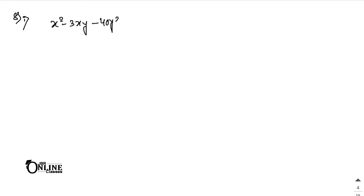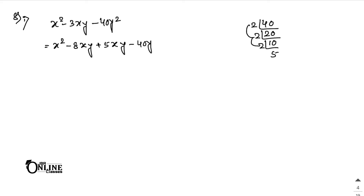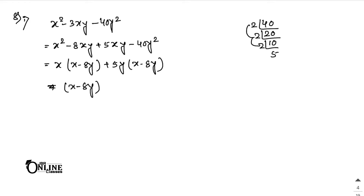Next, sum number 8(1): x² minus 3xy minus 40y². The coefficient of x² is 1, so 1 into 40 equals 40. Factorize 40: 20, 10, 2, 5. The middle term is 3xy, so make 3: 8 minus 5 equals 3. Write: minus 8xy plus 5xy minus 40y². Take out x giving (x minus 8y), then take out 5y also giving (x minus 8y). First factor: (x minus 8y), second factor: (x + 5y).